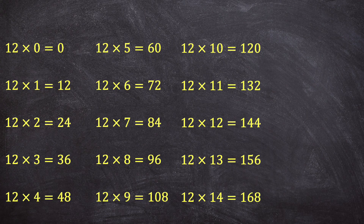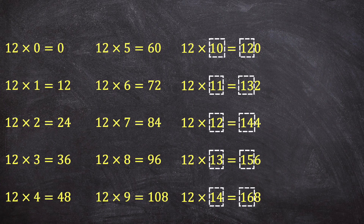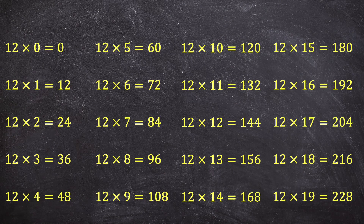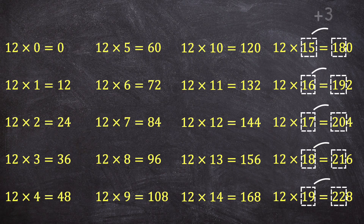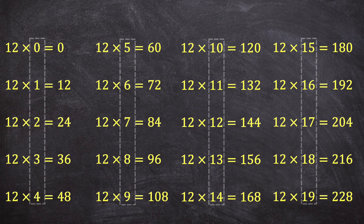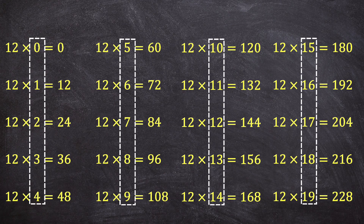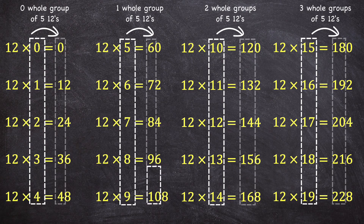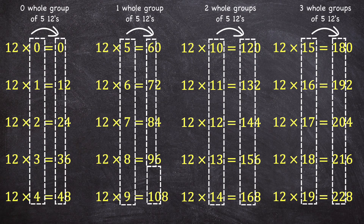And then at the next 5 multiples of 12, the amount of tens in the product is 2 more than the factor being multiplied by 12. And then the next 5 multiples of 12, the amount of tens in the product is 3 more than the factor being multiplied by 12. Hopefully you can see the pattern: you take the number being multiplied by 12 and add the number of whole times 5 divides into that number. That gives you the number of tens in the product.